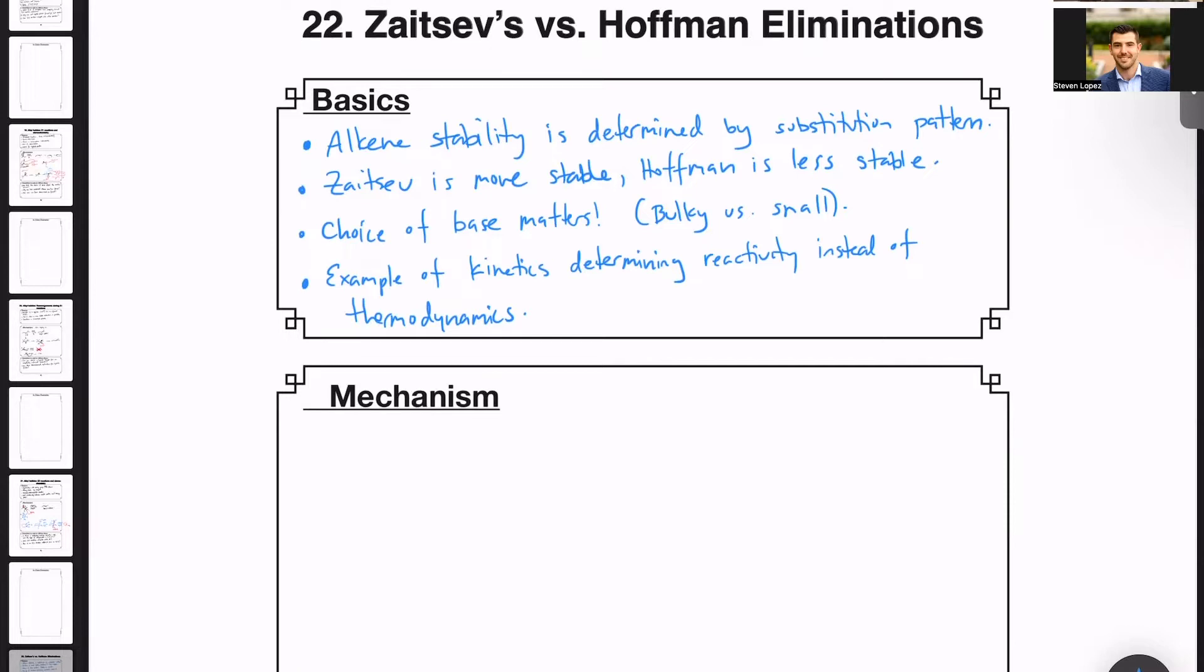First of all, alkene stability is determined by substitution pattern. More substituted alkenes are considered to be Zaitsev alkenes. Those alkenes that are less substituted are considered to be Hoffman alkenes.